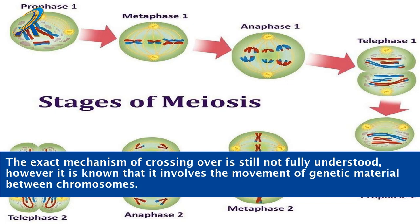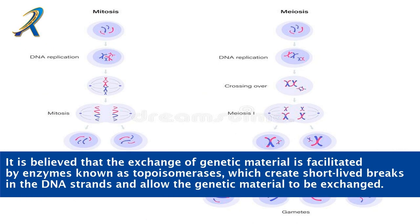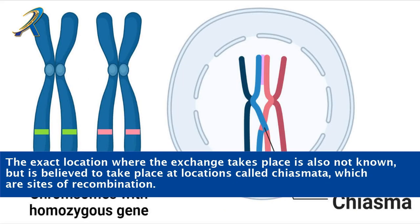The exact mechanism of crossing over is still not fully understood; however, it is known that it involves the movement of genetic material between chromosomes. It is believed that the exchange is facilitated by enzymes known as topoisomerases, which create short-lived breaks in the DNA strands and allow the genetic material to be exchanged. The exact location where the exchange takes place is also not known, but is believed to occur at locations called chiasmata, which are sites of recombination.